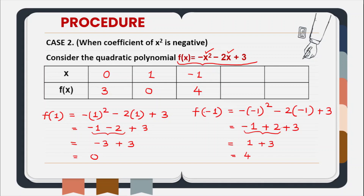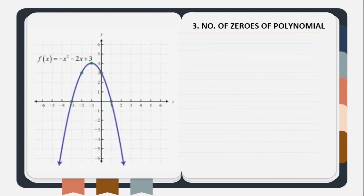So let us find further two values: for x equal to minus 2 and x equal to minus 3. For x equal to minus 2, the value of f(x) will be 3, and for x equal to minus 3, the value of f(x) will be 0. You can cross-check this solution table by doing it yourself in your rough notebook. Now since we have found the solution table, let us plot these points on graph. All values of x represent x-coordinates and all values of f(x) represent y-coordinates.